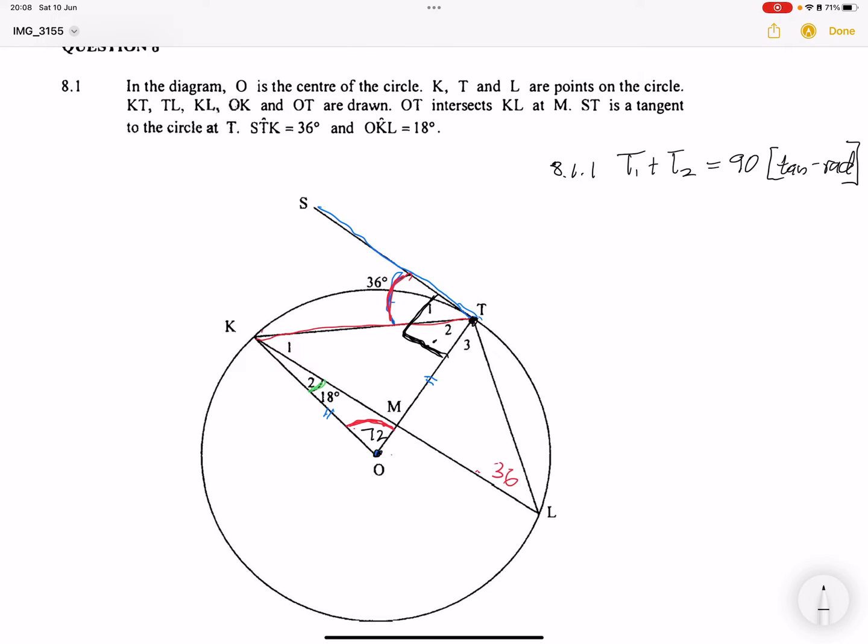They said we need to find the size of T2. First and foremost, we know that T1 plus T2 is equal to 90 degrees. And why is that? That is because of the tan-radius theorem. In this case, because we've got T1 and T2, but we know that T1 is 36 degrees, meaning that T2 would be equal to 90 degrees minus T1, which is 36, and that will be 54 degrees.